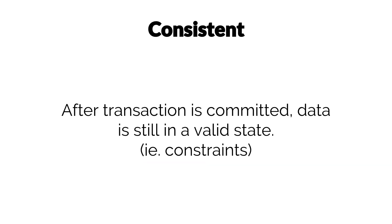Next, we have C for consistency. By consistency, we mean that after a transaction is performed, all of the data is still in a valid state. In the context of our example, we could set a constraint on the account balance field to make sure it never goes below zero. We could then rely on the database management system not to commit a transaction that would leave the database with negative numbers in the account balance field — or in other words, transfer money that isn't there.